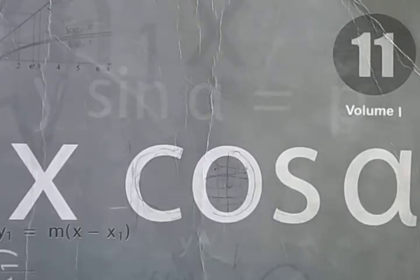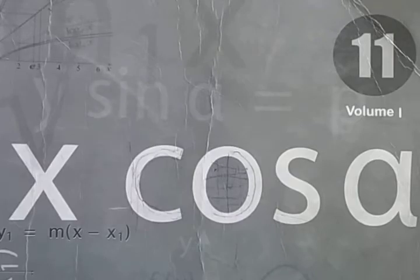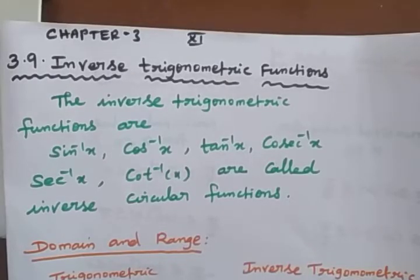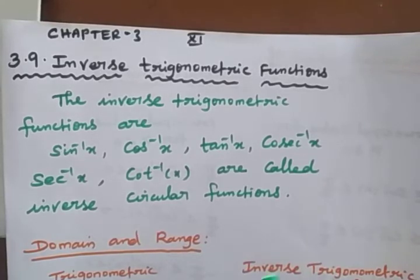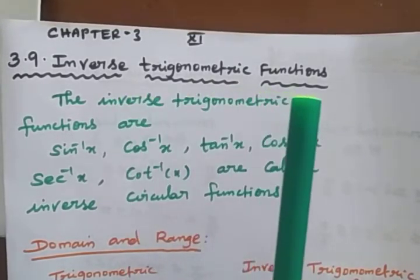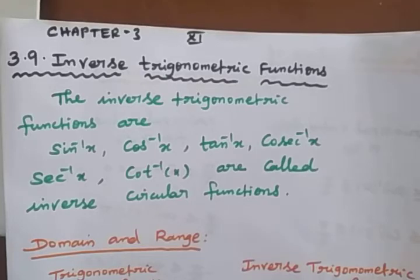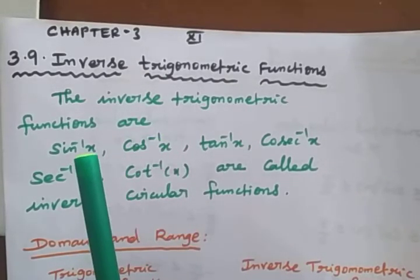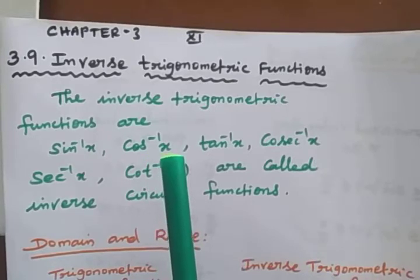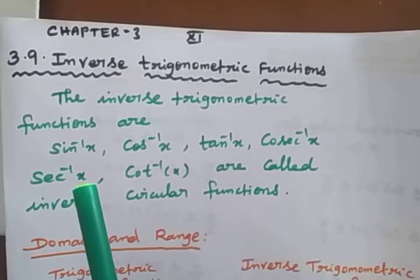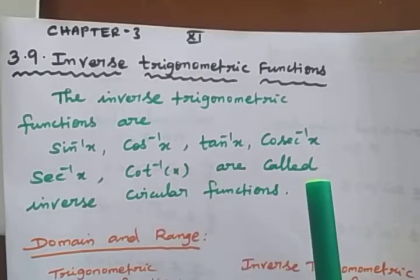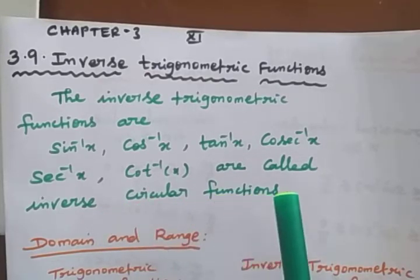Hi students, happy morning to all. This is Vizendil Kumar. This is 11th standard mathematics volume 1. Today we are going to start with new content — 3.9 Inverse Trigonometry Functions. The inverse trigonometry functions are sin⁻¹(x), cos⁻¹(x), tan⁻¹(x), cosecant⁻¹(x), secant⁻¹(x), and cot⁻¹(x). These are called inverse circular functions or inverse trigonometric functions.